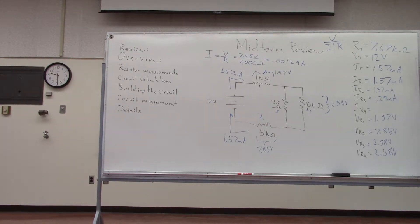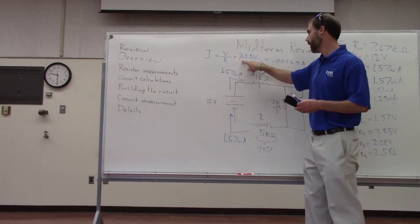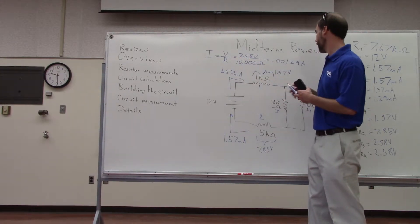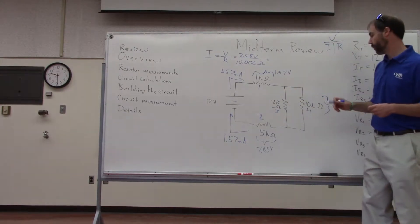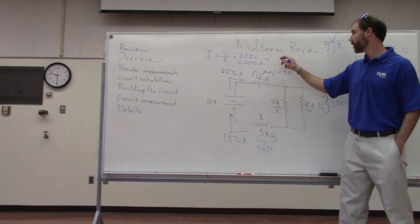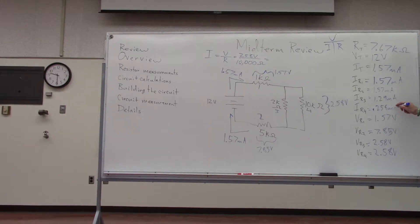For R4, it's the same calculation except the resistance is 10,000 ohms. The current through R4 comes out to be 0.258 milliamps — or 258 microamps.